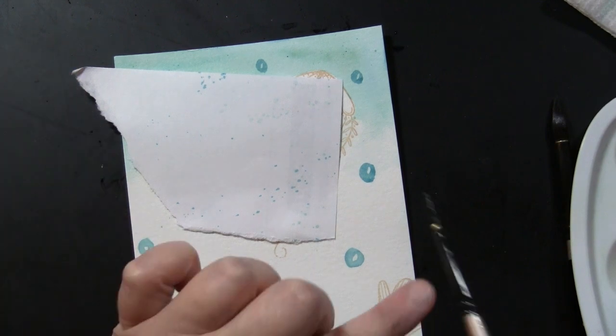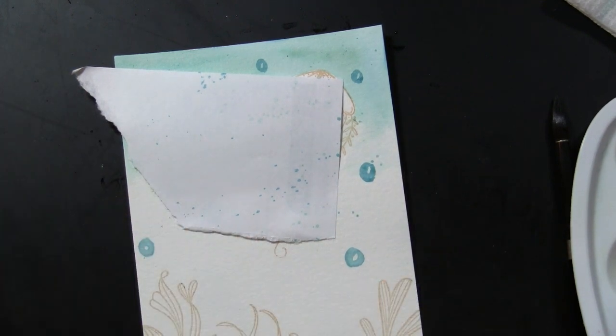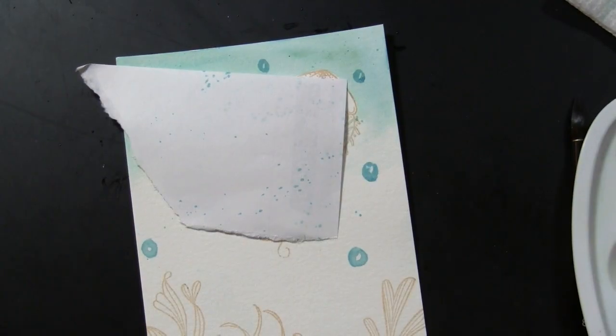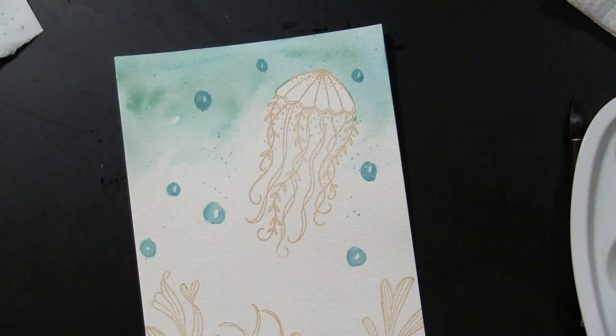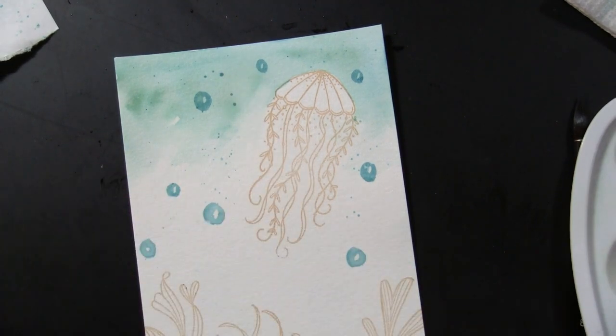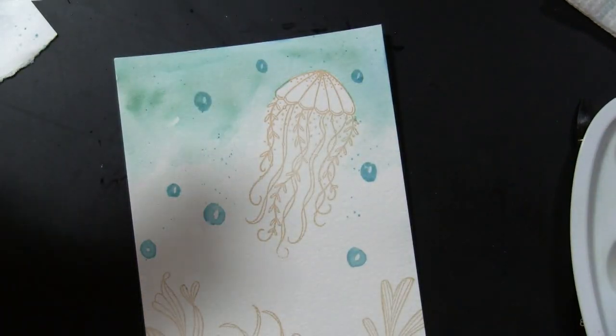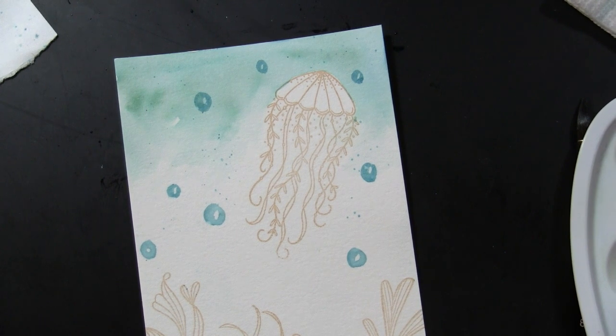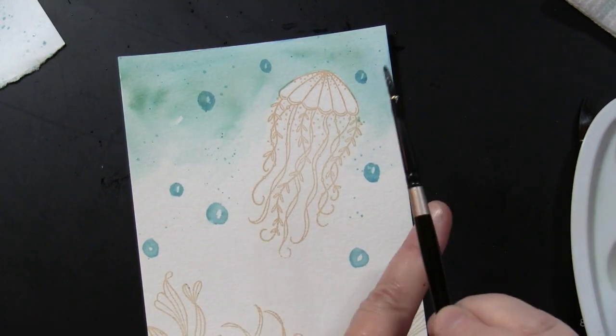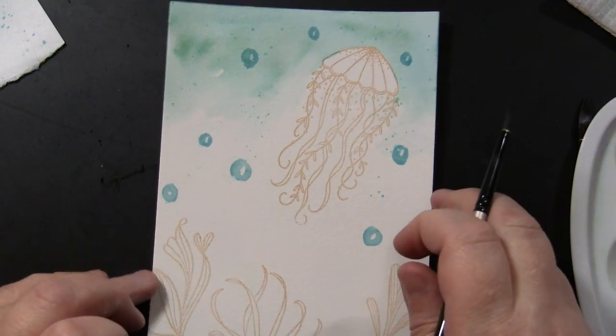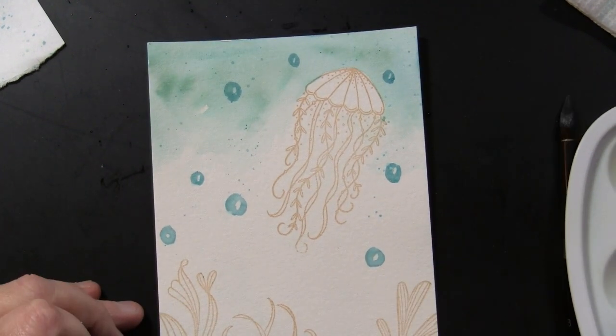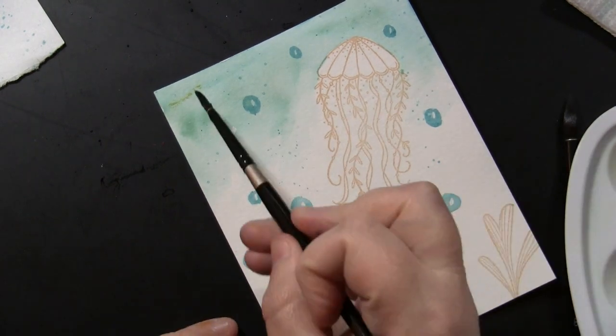And I am covering up that jellyfish because my luck is I always get a giant blue splatter right in the middle of the image where I don't want it. So I'm just using a piece of scratch paper there to cover that up. And those will dry back just a little bit lighter, too. But again, I think that just adds to the movement of the entire scene.